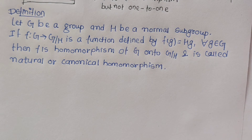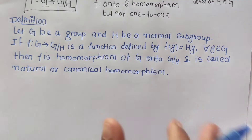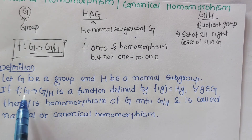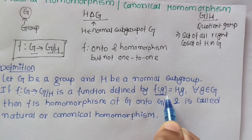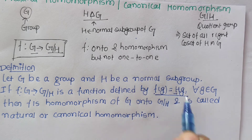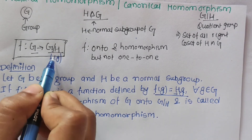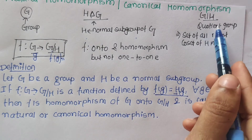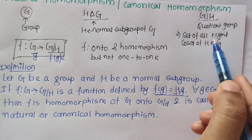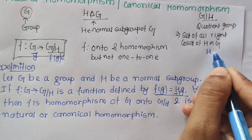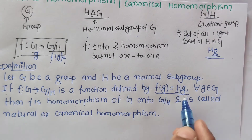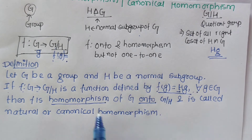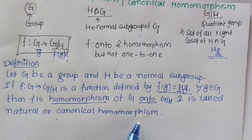Here we have the definition of natural or canonical homomorphism. Let G be a group and H a normal subgroup of G. Then a mapping f from G to G by H is defined by f(g) = Hg for all g belonging to G. The image is a coset, and the elements of this group are the set of all right cosets of H in G. Then f is a homomorphism and it is onto, so this is called natural or canonical homomorphism.